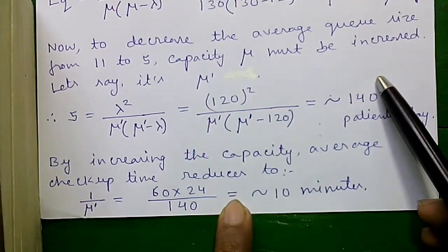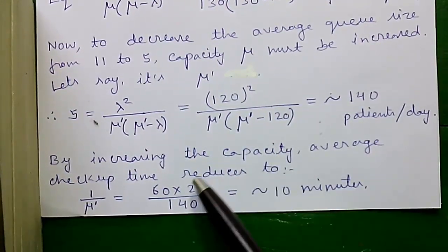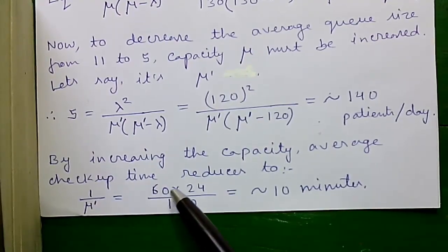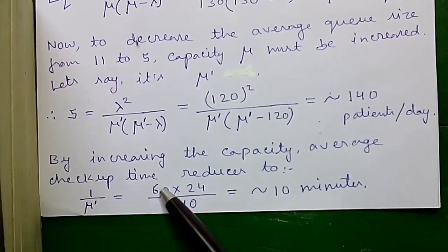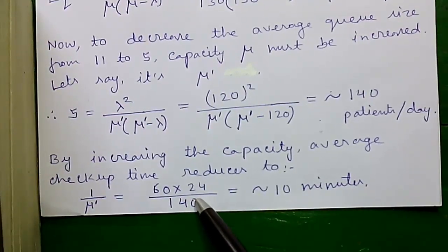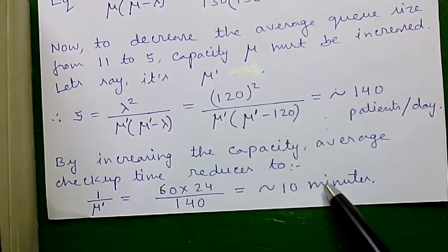So by increasing the capacity, the average checkup time reduces to 1 by mu dash. That's equals to 60 minutes per hour into 24 hours divided by 140. That's equals to around 10 minutes per patient.